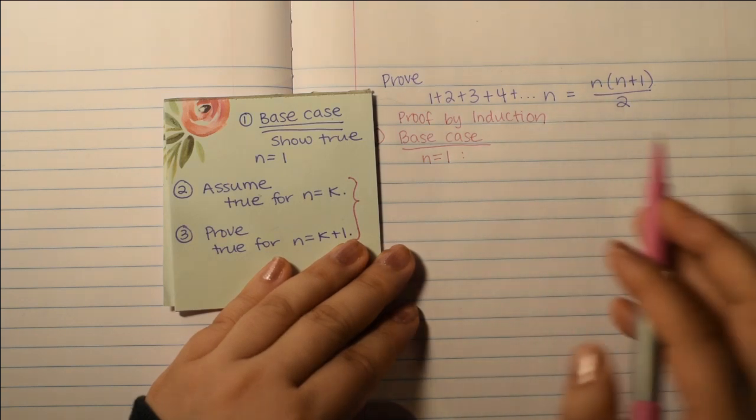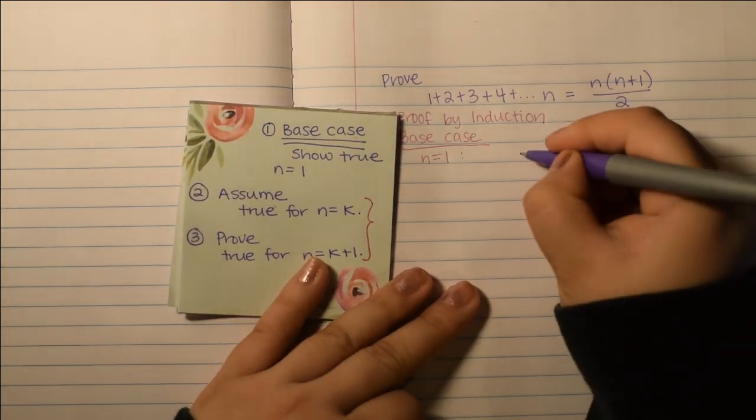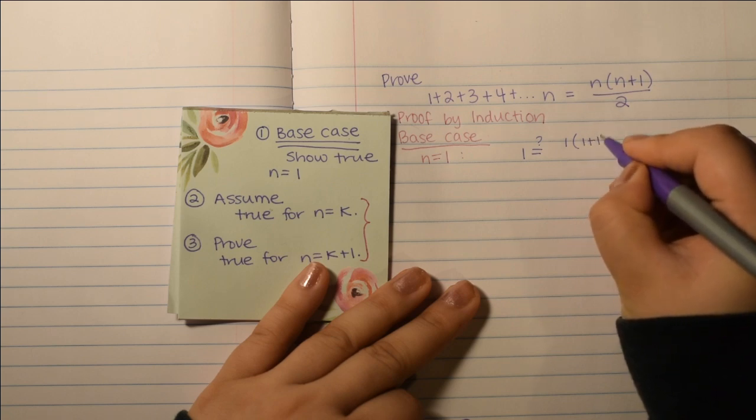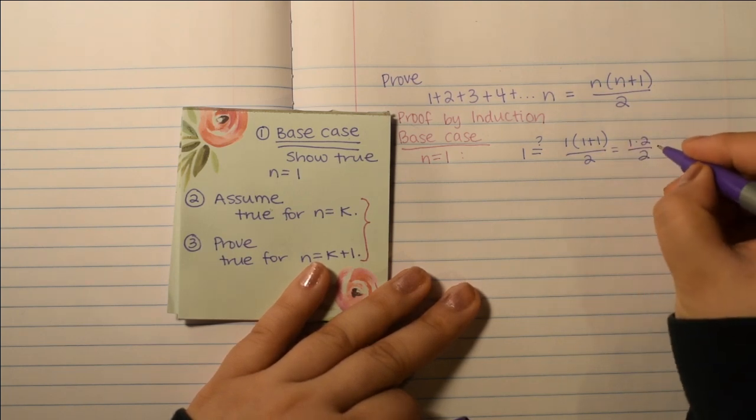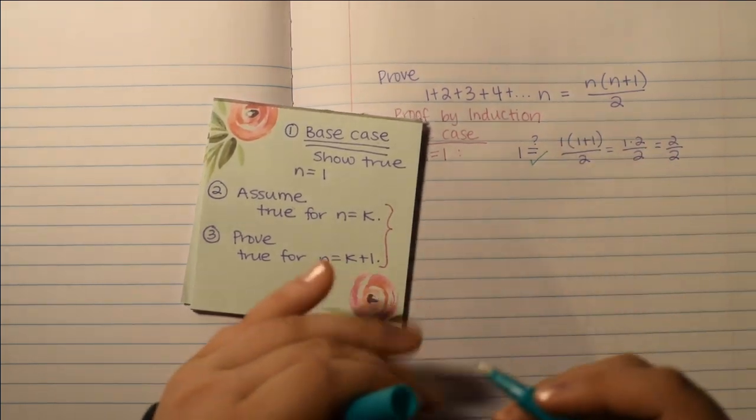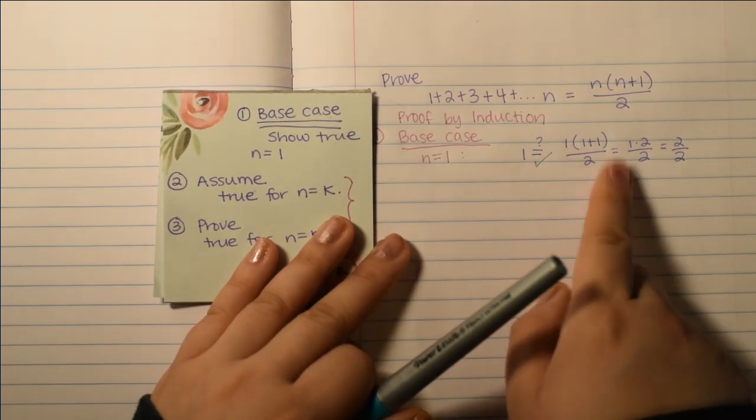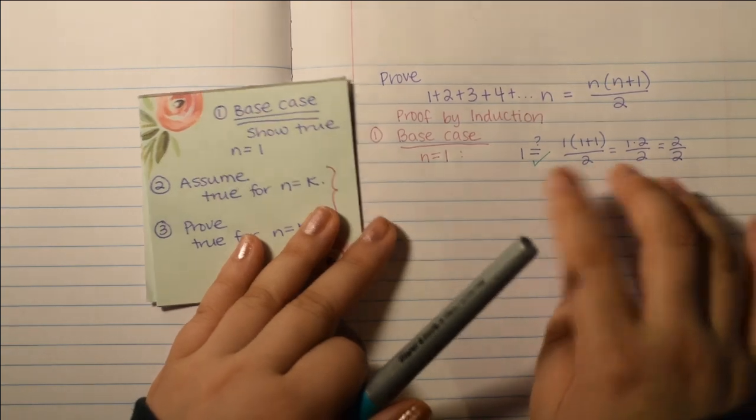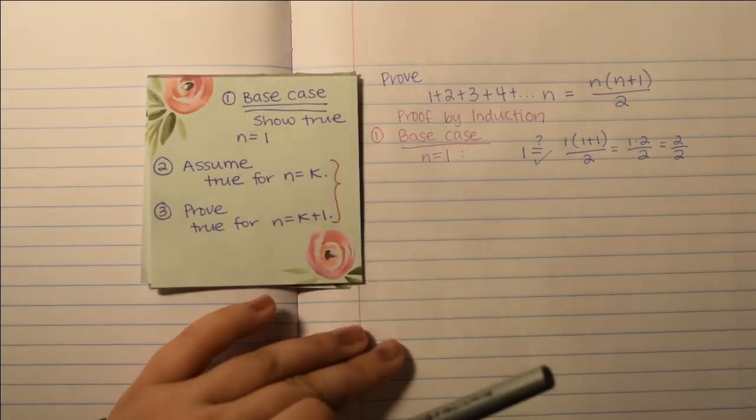So, for n equals 1, it's just going to be 1 on this left side, because we're adding numbers from 1 to 1, which is just 1. So, is that equal to, if n equals 1, 1 times 1 plus 1 over 2? So, this equals 1 times 2 over 2, which is 2 over 2, which is indeed 1. So, we showed that this is true. Check. So, make sure that if you're showing that something is true, put the question mark, because you don't assume it's true, and then say it's true. You have to logically say, is this equal to this, and then somehow make the two sides equal. So, we showed that it's true for n equals 1.